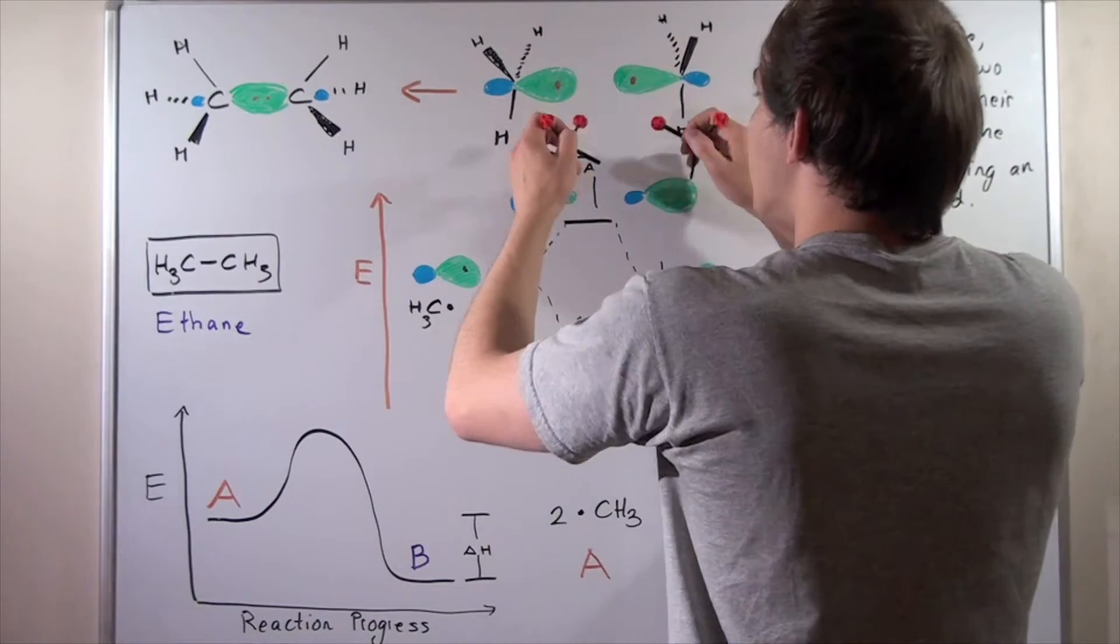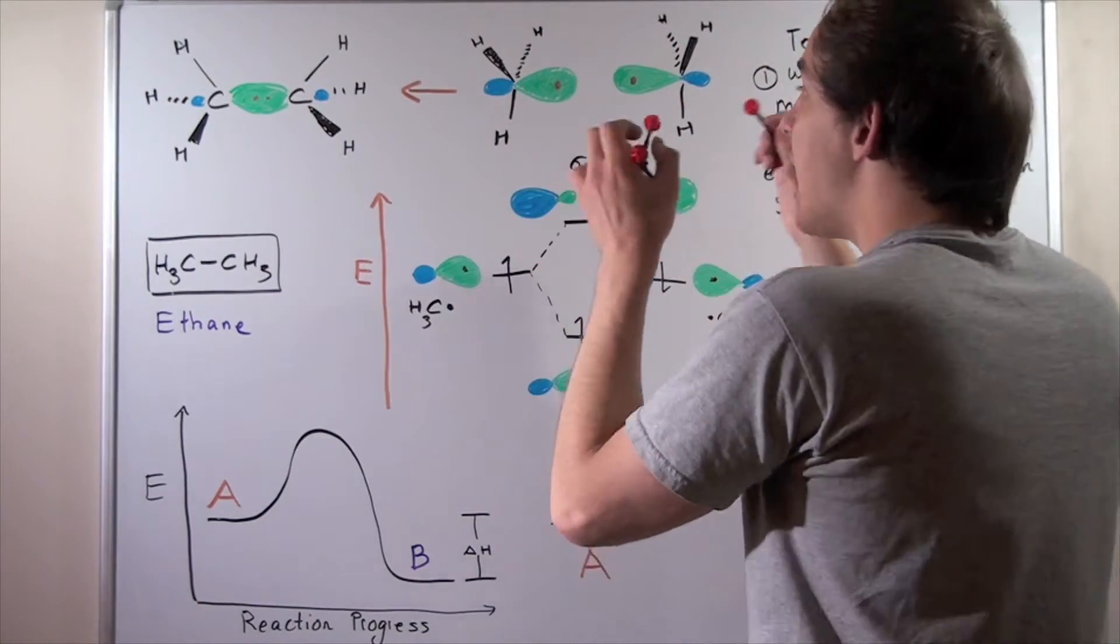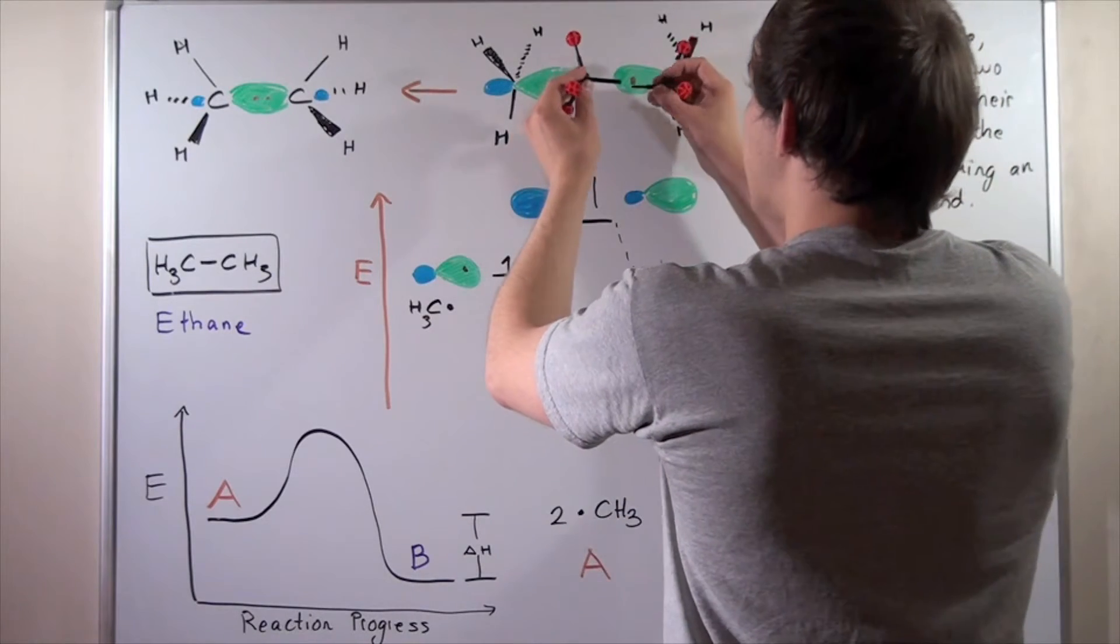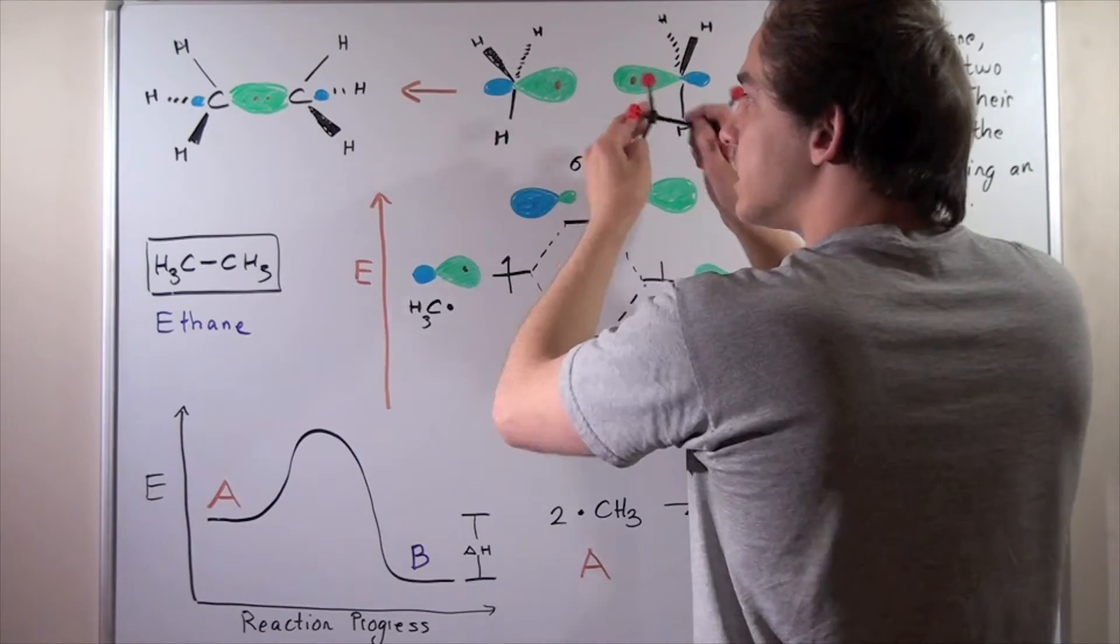And eventually, when they come close enough, there's an overlap between these two sp3 hybridized orbitals, and they form what we know as a covalent bond.